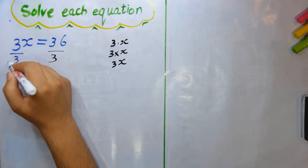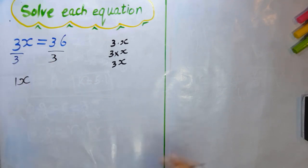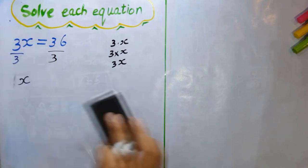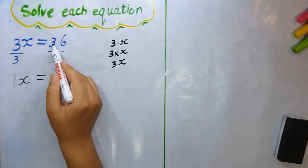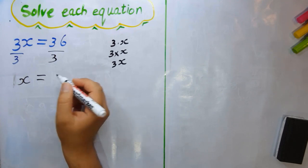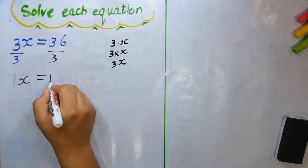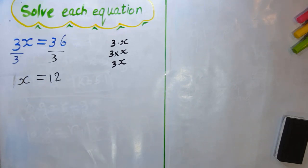Three divided by 3 is 1, but we don't write 1 — we just leave it as x. Then 36 divided by 3: 6 divided by 3 is 2, so the answer is x = 12.